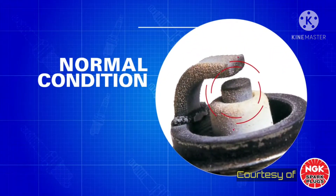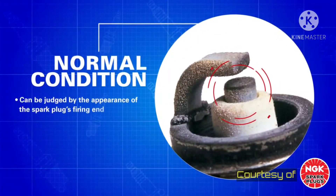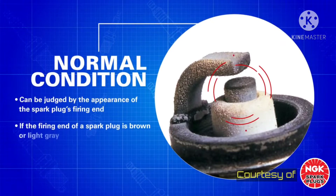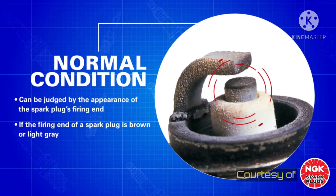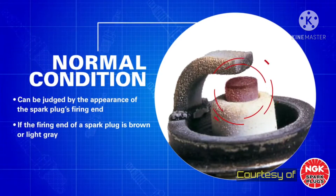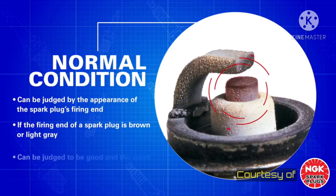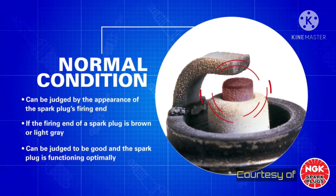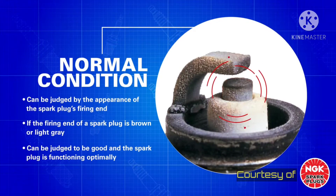Normal Condition. For a normal condition spark plug, the firing end of a spark plug is color brown or light gray. The condition can be judged to be good and the spark plug is functioning optimally.